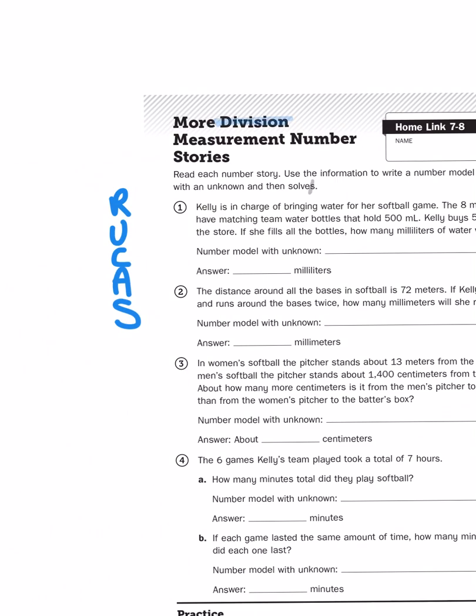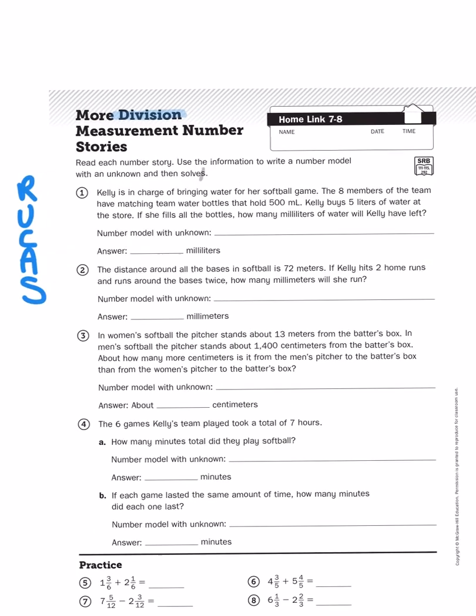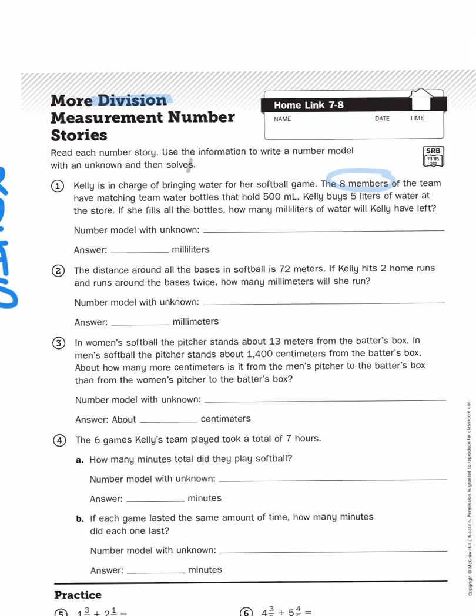That is, of course, to reread the problem, underline the question, circle the important information, come up with an action plan, and then solve it. Now, the title of this homelink activity is division number stories, so I'm going to assume my action plan is to divide something. But let's look again and read with intention. We've got a couple things going on here. We know that there's eight people on the team. They have 500 milliliter water bottles, and Kelly bought five liters of water, which is another measurement unit. So, we have to figure out how much water will the eight members need to fill their water bottles, and how much water does Kelly really have in comparison?